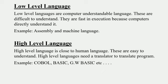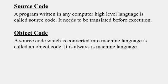A program written in any high level language is called source code. It needs to be translated before execution. The translated form that the computer can run is the object code.